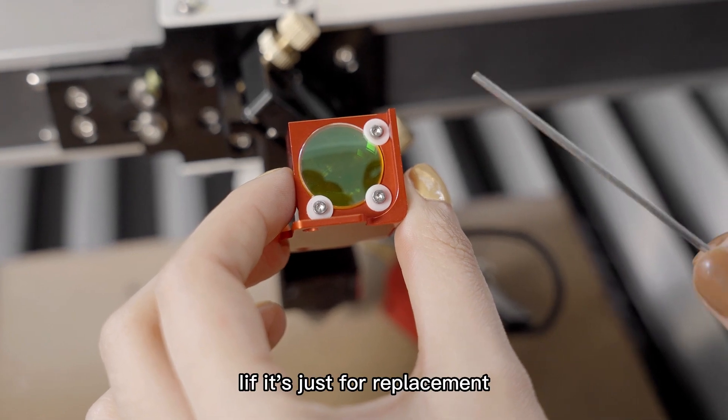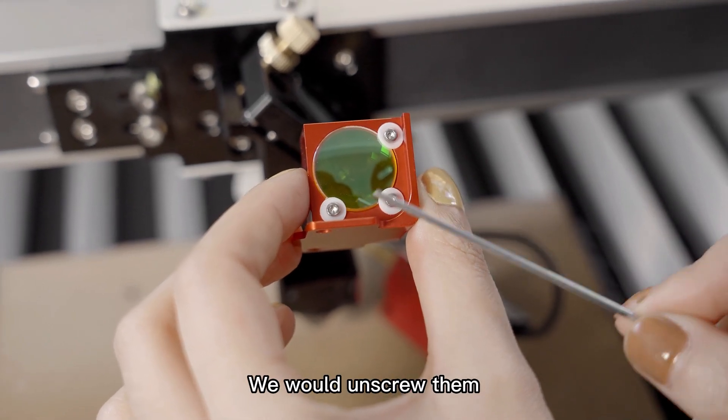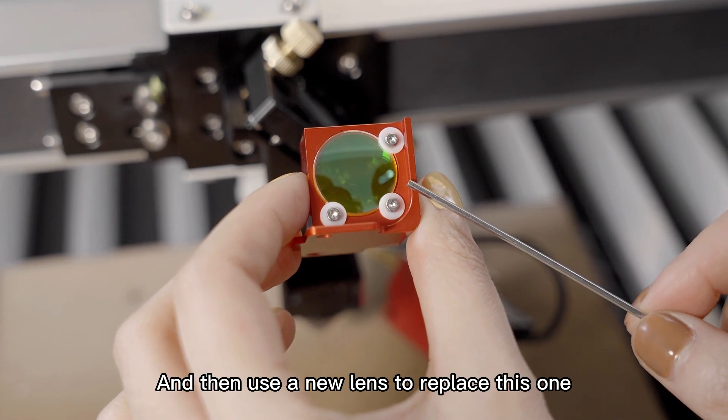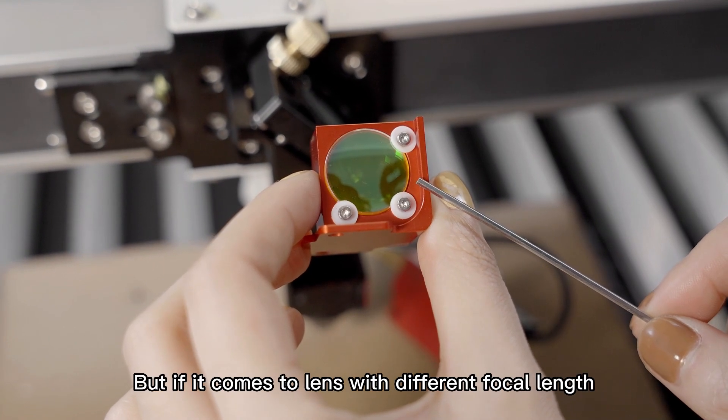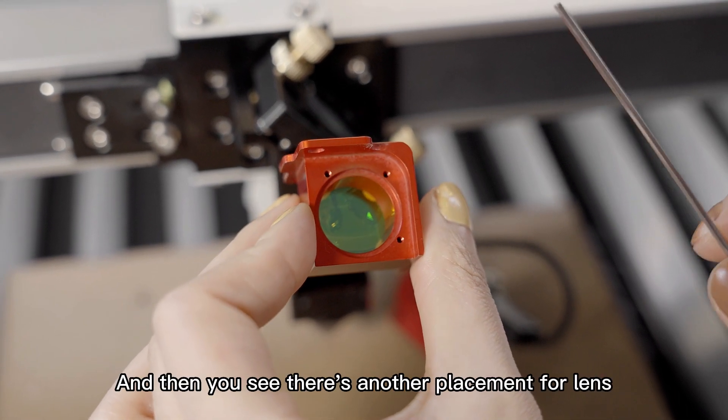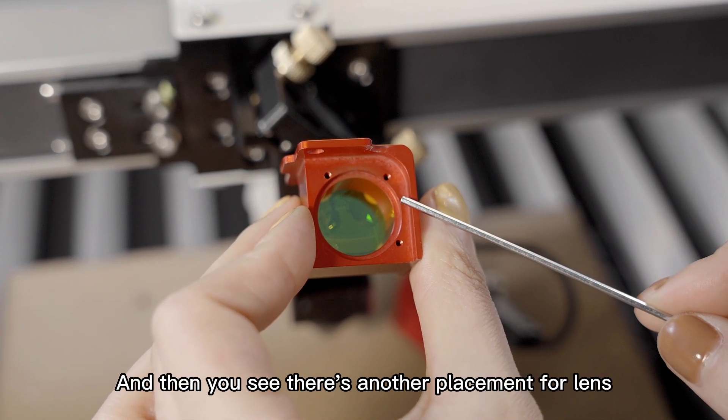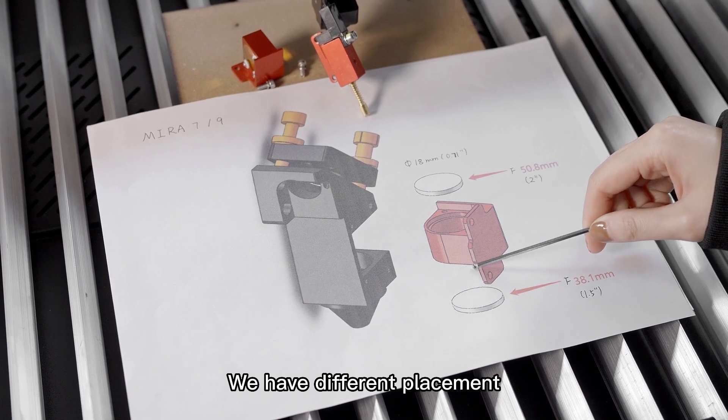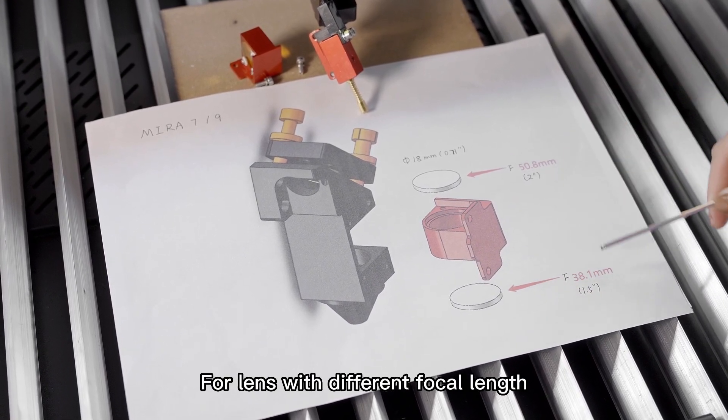If it's just for replacement, we would outscrew them and then use a new lens to replace this one. But if it comes to lens with different focal length, then we need to invert it. And then you see there's another placement for lens. We have different placement for lens with different focal length.